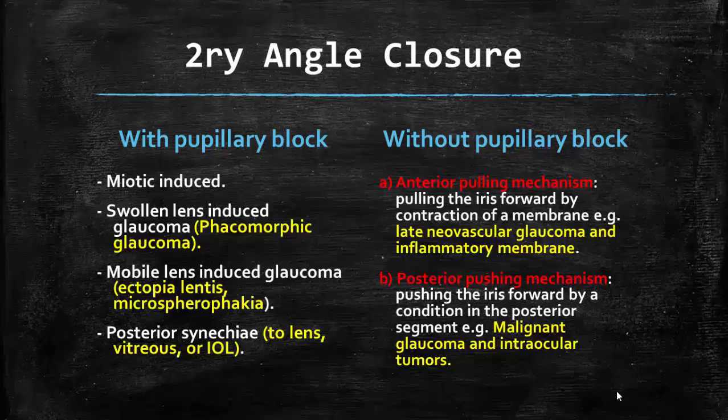Without pupillary block, there are two mechanisms that cause secondary angle closure glaucoma. The first is the anterior pulling mechanism and the second is the posterior pushing mechanism. The anterior pulling mechanism occurs by pulling the iris-lens diaphragm forward by contraction of a membrane, as in cases of late neovascular glaucoma and by inflammatory membrane. While the posterior pushing mechanism occurs by pushing the iris-lens diaphragm forward by a condition in the posterior segment, like malignant glaucoma and intraocular tumor.